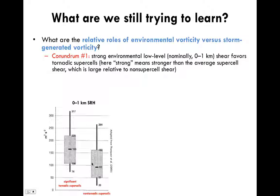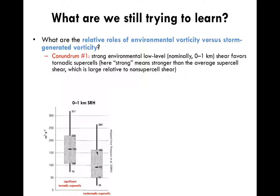This box-and-whiskers plot from Thompson et al. 2003 shows there's not perfect separation between significant tornadic supercells and non-tornadic supercells. If there were perfect separation, there'd really be no forecasting problem. But there are clear differences in the distributions of low-level storm-relative helicity — related to environmental horizontal vorticity — which is quite a bit larger on average in environments of significant tornadic supercells making EF2 and stronger tornadoes. The 50th percentile value in significant tornadic supercell environments is bigger than more than 75% of values in non-tornadic supercells.